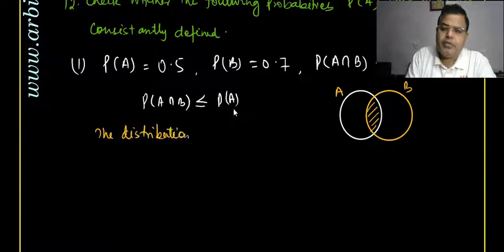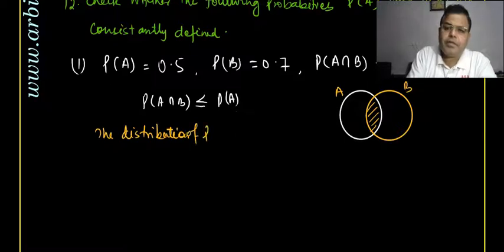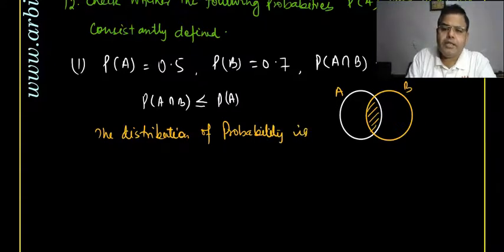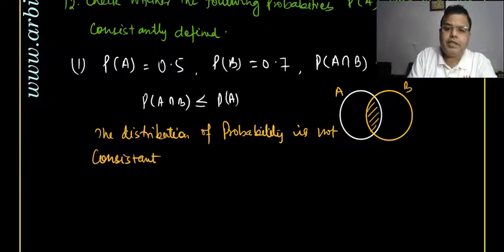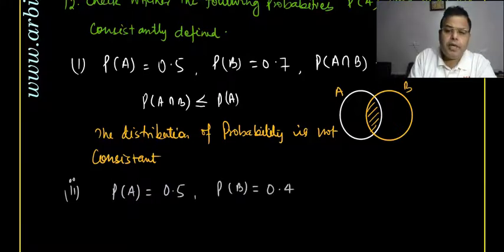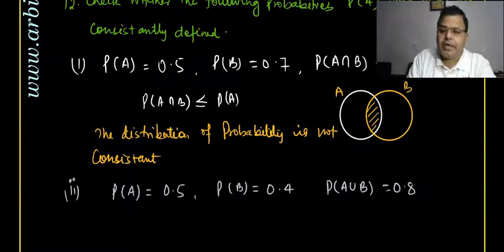Therefore the distribution of probability is not consistent for the first part. The second part of the question gives P(A) = 0.5, P(B) = 0.4, and P(A ∪ B) = 0.8.